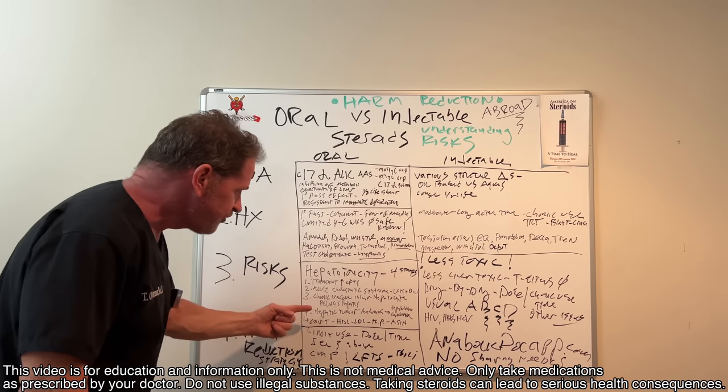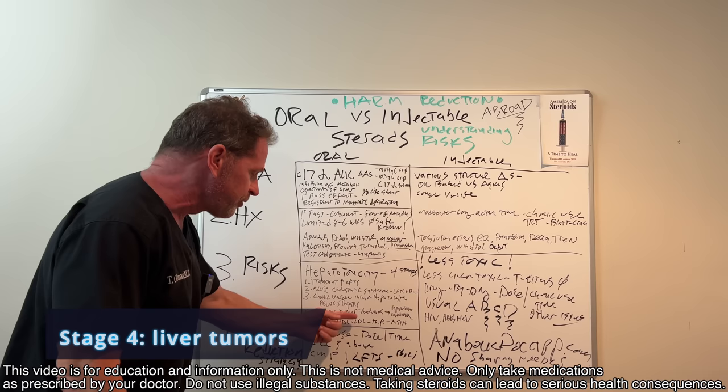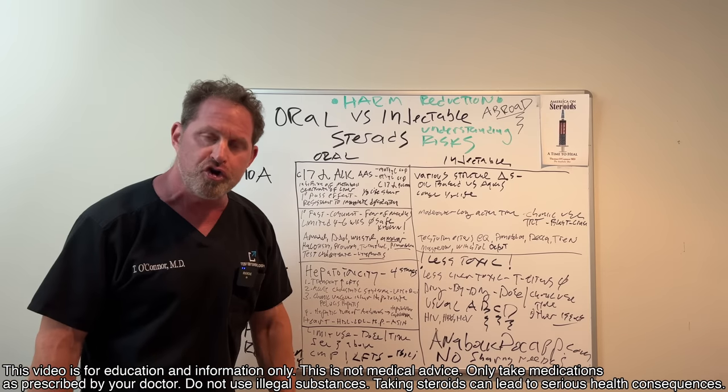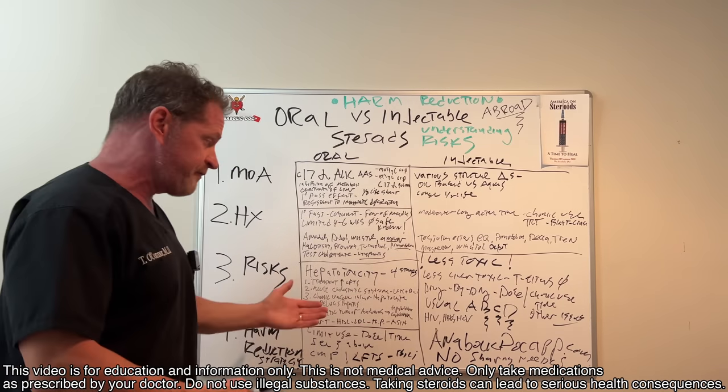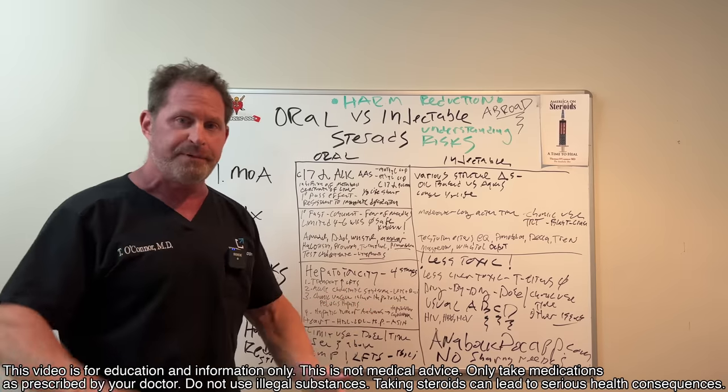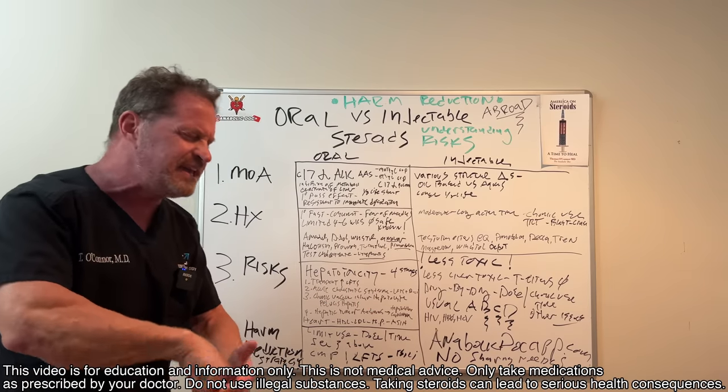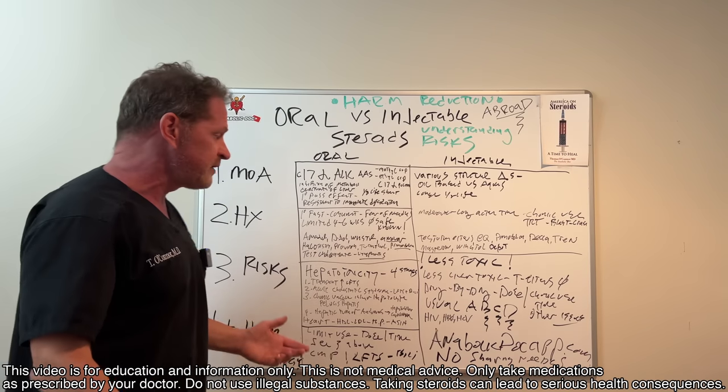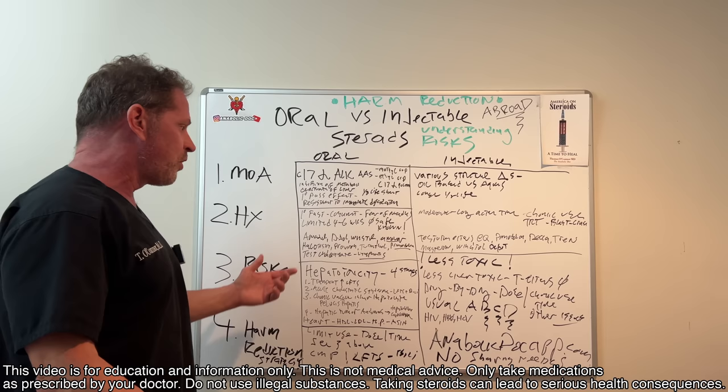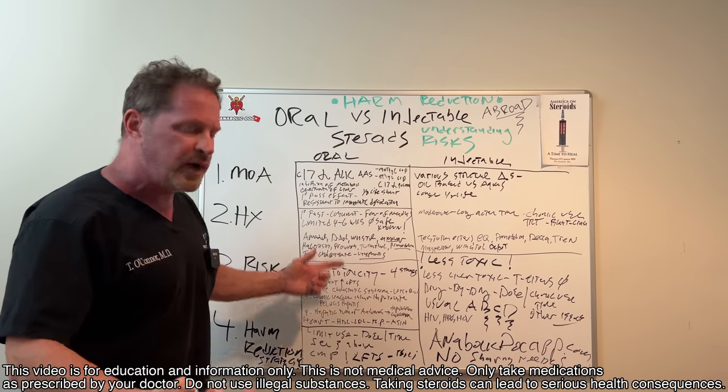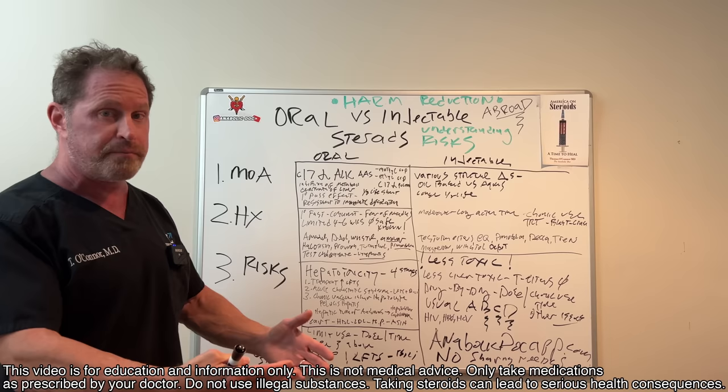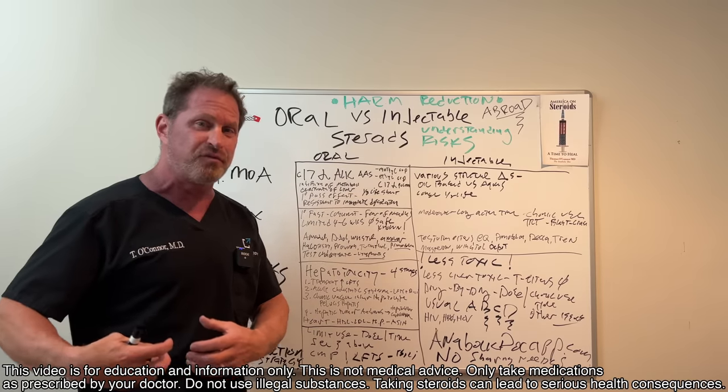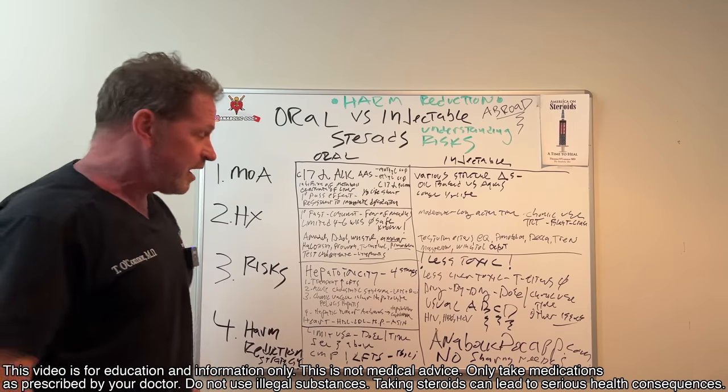So the stage four is the tumor, hepatic tumors and adenomas and then full-blown hepatocellular carcinoma, guys. I've never seen that. I've heard about it though. That's going to take, you got to be on the gas a long time. I've seen stories of it and I've seen men where they've lived on like Turinabol or Anadrol or D-Ball, maybe Winstrol for way too long, even a year, months at a time, maybe more than a year. And they've had to have surgery and part of the liver removed. Unbelievable.